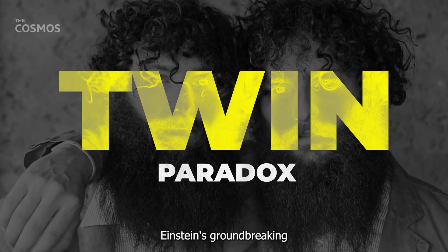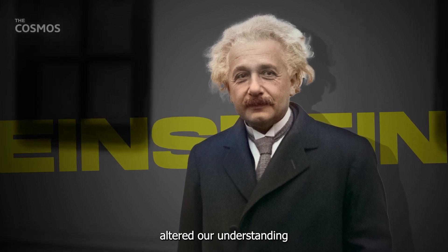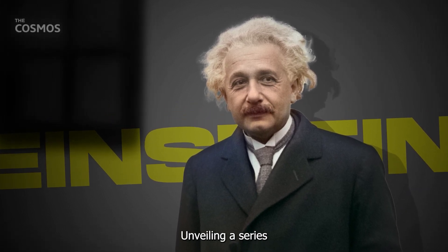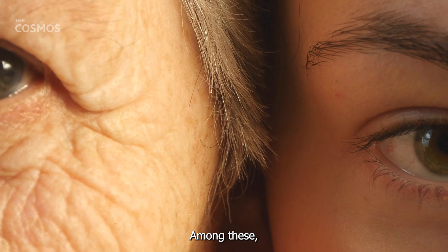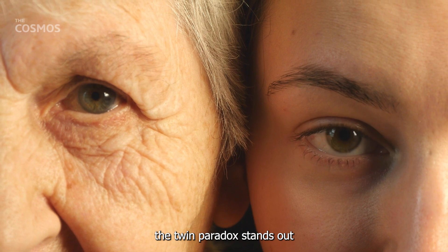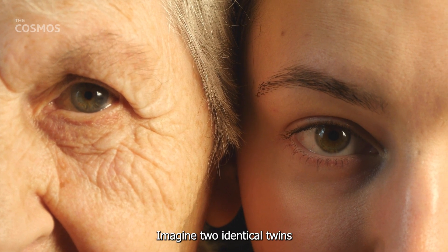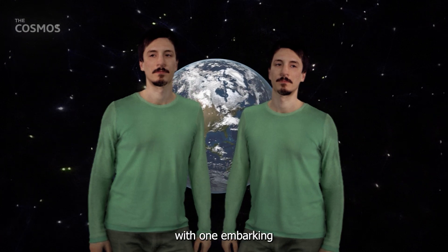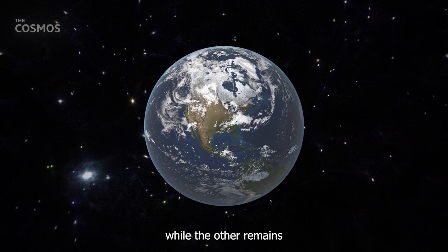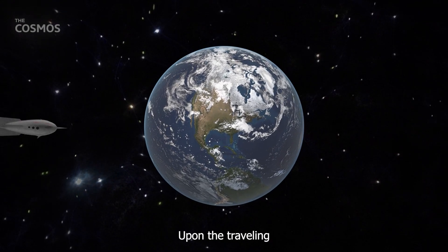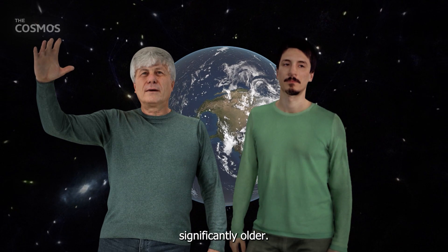Twin Paradox. Einstein's groundbreaking theory of relativity forever altered our understanding of the cosmos, unveiling a series of mesmerizing phenomena that challenge our everyday intuitions. Among these, the Twin Paradox stands out as a captivating illustration of time's malleability. Imagine two identical twins, with one embarking on a high-speed journey through space, traveling near the speed of light, while the other remains anchored on Earth. Upon the traveling twin's return, they would find their Earth-bound sibling significantly older.